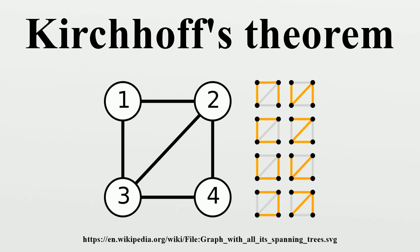Kirchhoff's theorem can be modified to count the number of oriented spanning trees in directed multigraphs. The matrix Q is constructed as follows: the entry Q_ij for distinct i and j equals minus m, where m is the number of edges from i to j. The entry Q_ii equals the out-degree of i minus the number of loops at i. The number of oriented spanning trees rooted at a vertex i is the determinant of the matrix obtained by removing the i-th row and column of Q.